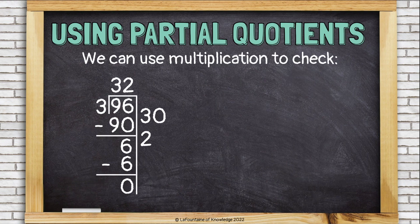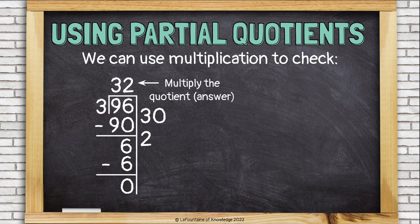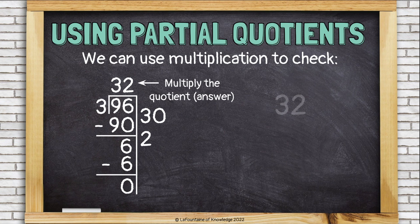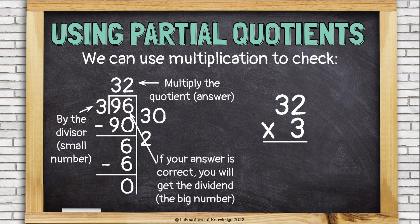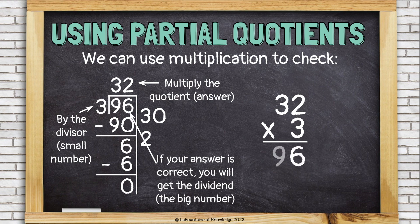We can use multiplication to check the answer to a division problem. We multiply the quotient, which is the answer, by the divisor, the small number. If our answer is correct, we should get the dividend when we multiply, the big number. Let's see if we do. 3 times 2 is 6, and 3 times 3 is 9. Yes, our answer is correct.